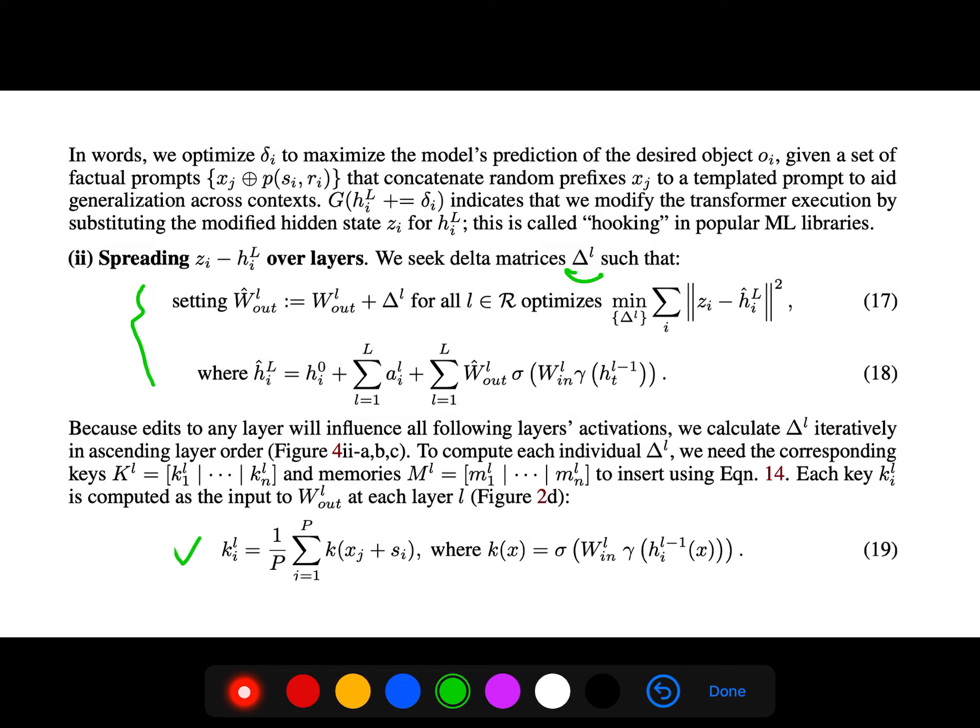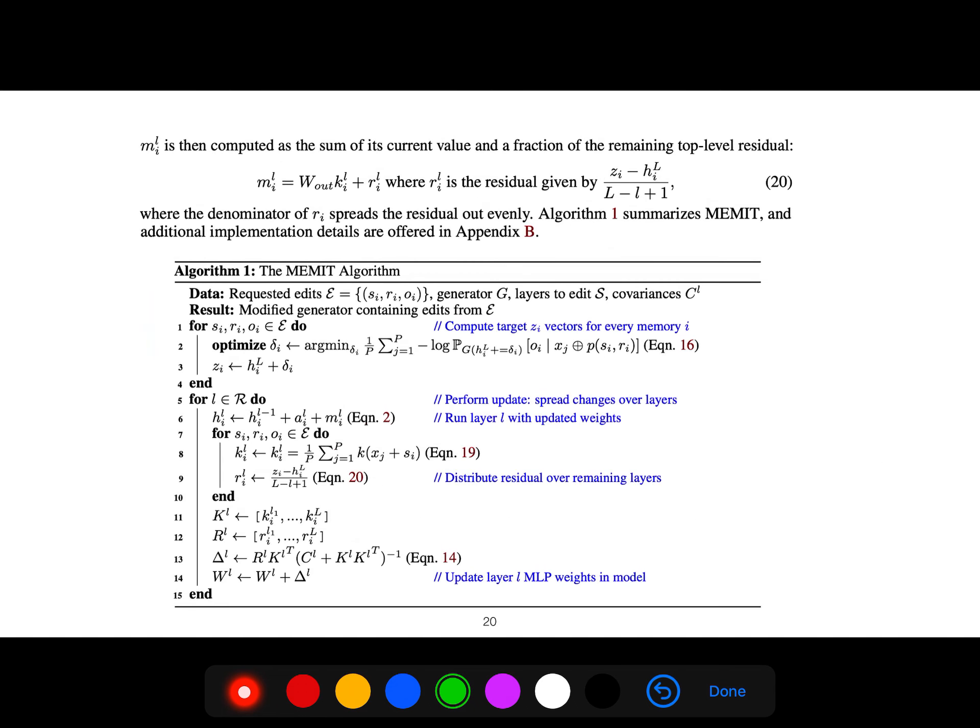Each key here is computed as the input to W^out for each layer. This is the total algorithm of MEMIT. We update layer l MLP in the model.